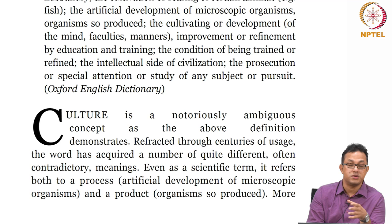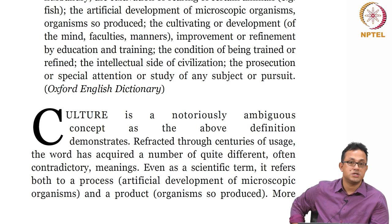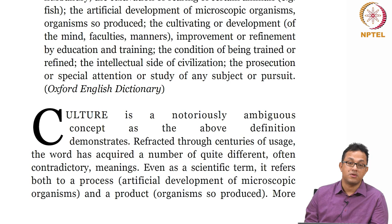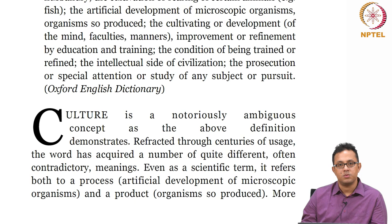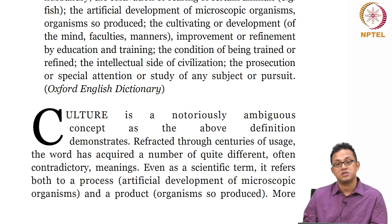Refracted through centuries of usage, the word has acquired a number of quite different, often contradictory meanings. Even as a scientific term it refers both to a process — the artificial development of microscopic organisms — and a product — the organisms so produced. So culture can be seen as a process as well as a product. It is a process of acquiring something, but at the same time also a product of having acquired it. When I say someone is a cultured person, we are looking at culture as a product — something which has happened, which is materially present and can be defined, quantified, and calibrated. But when looking at culture as a process of becoming, it becomes a constant movement.